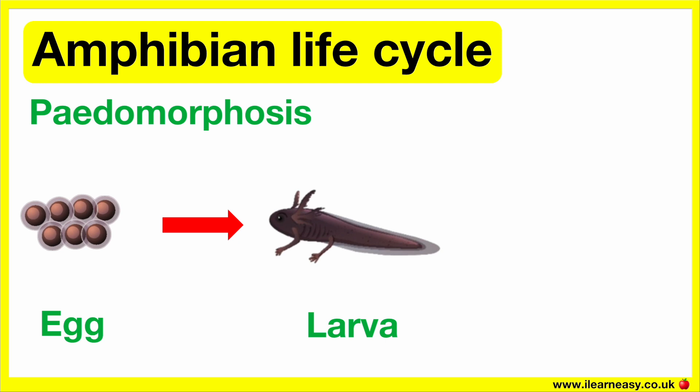Therefore, the salamander has adult traits even though it looks like it's still in its larval stage. In its adult form, the salamander can reproduce to repeat this cycle.